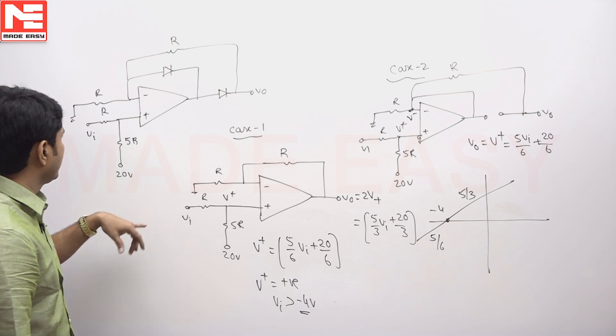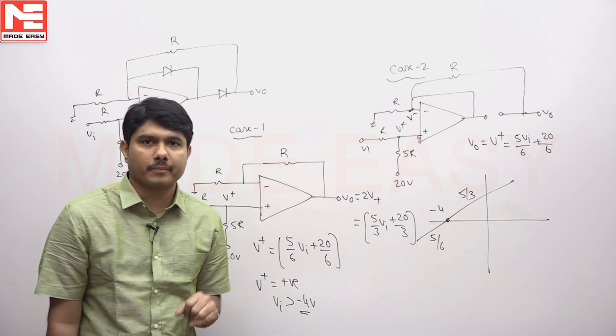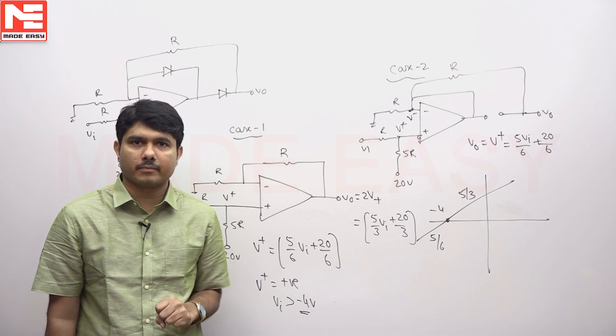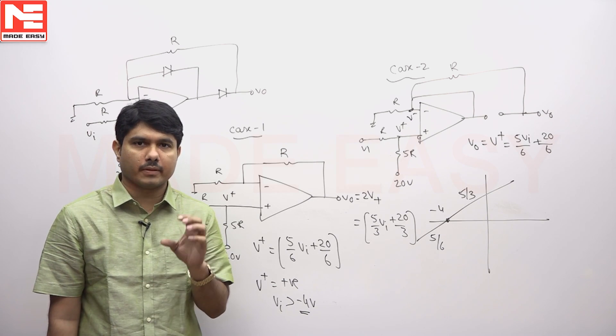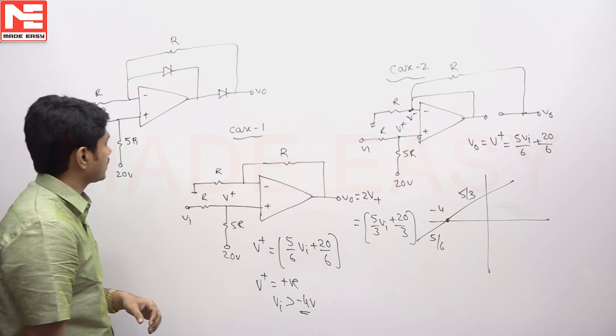In this design, two diodes are connected. But remember, whenever you're solving this type of question, first we should not estimate which diode is on or off. First we have to assume open loop conditions.